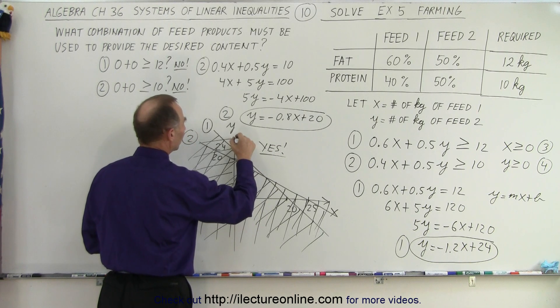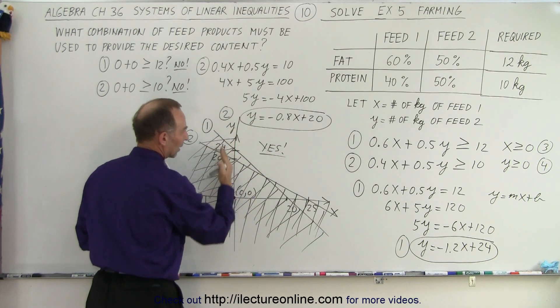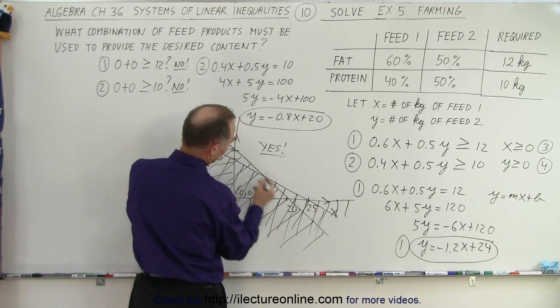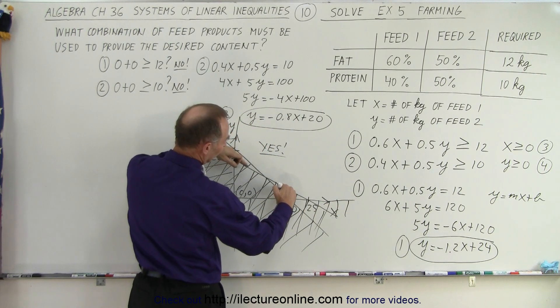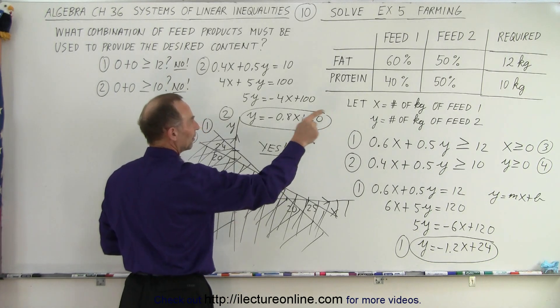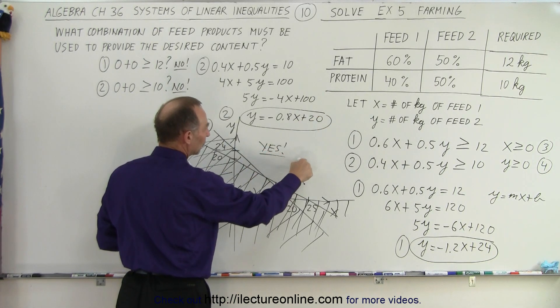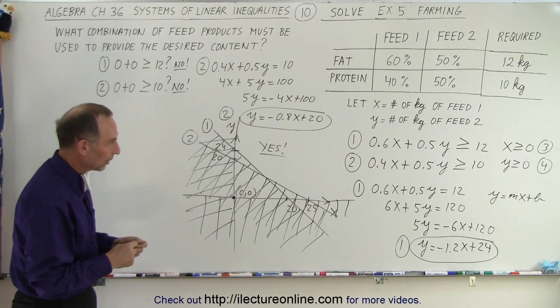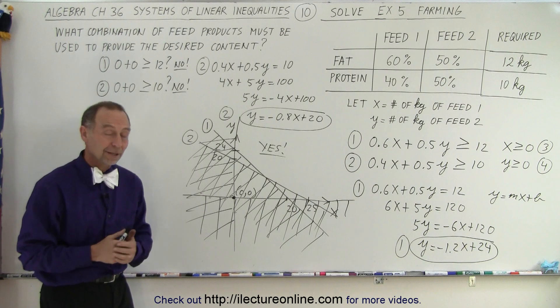Yes, that's the correct region. So it's between the y-axis, the x-axis over here, and then bounded by the two lines being on this side of it. And so we can produce the quantity of feed that we want. If we are anywhere in this region, we'll get enough feed with fat and protein in it as required. And that is how it's done.